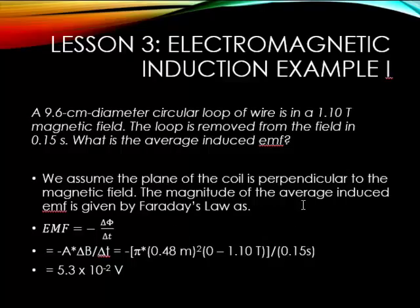We assume that the plane of the coil is perpendicular to the magnetic field. Otherwise, that's the change of the angle, and if it's parallel, it's going to give us nothing. So then the magnitude of the average induced EMF is given by Faraday's law. The EMF is negative delta phi over delta t. Remember, phi is the flux, or it's the magnetic field times the area.